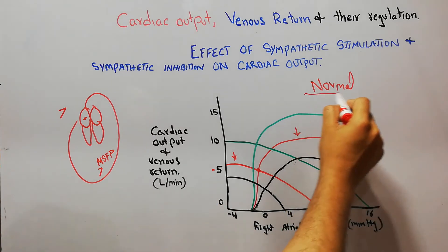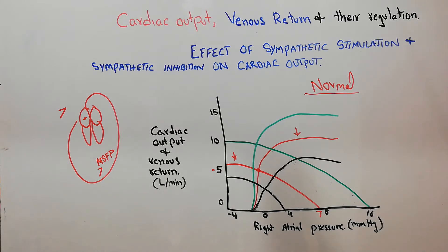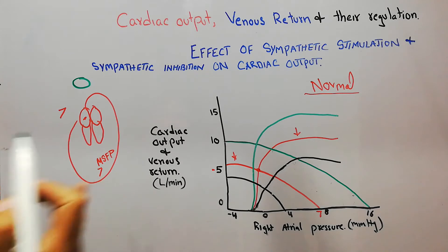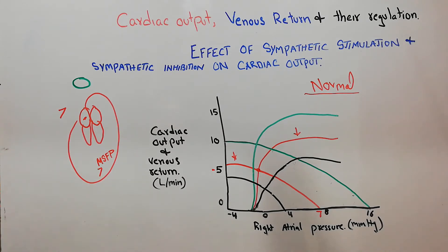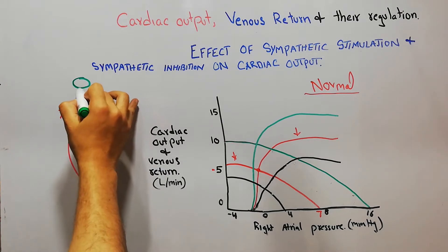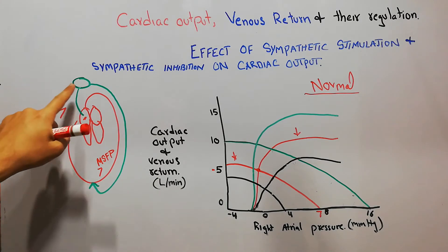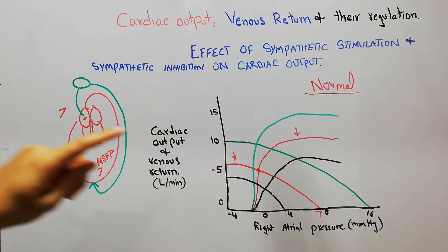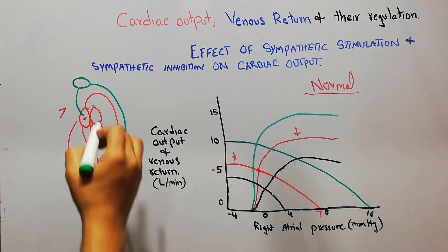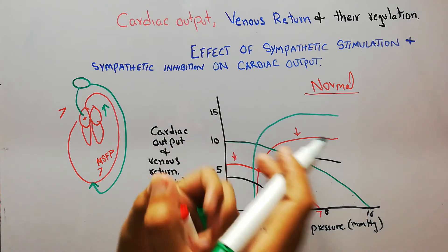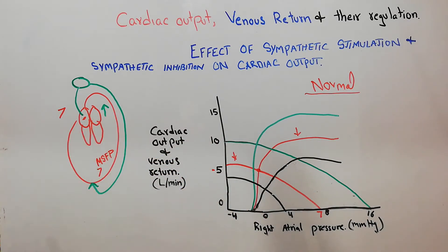Now, if sympathetic stimulation occurs — for example, when the sympathetic nerves get stimulated due to a fight-or-flight response in the brain — they send signals to the heart and to the peripheral vessels. When sympathetic stimulation occurs, the heart rate increases, and similarly the power of contraction of the heart also increases.